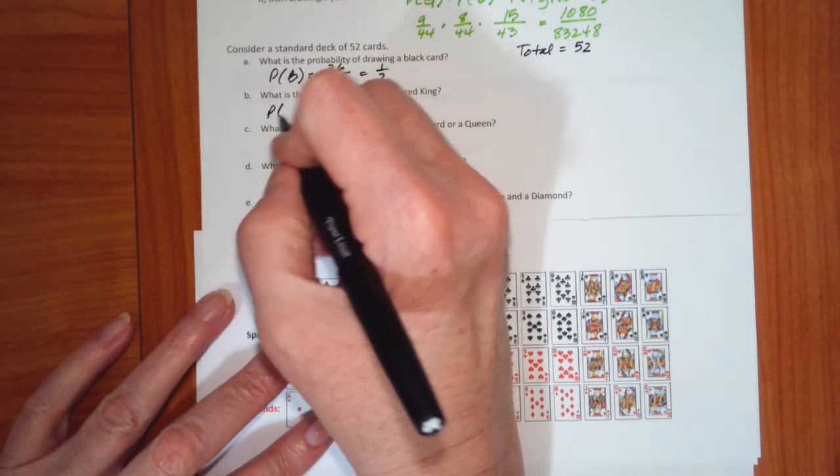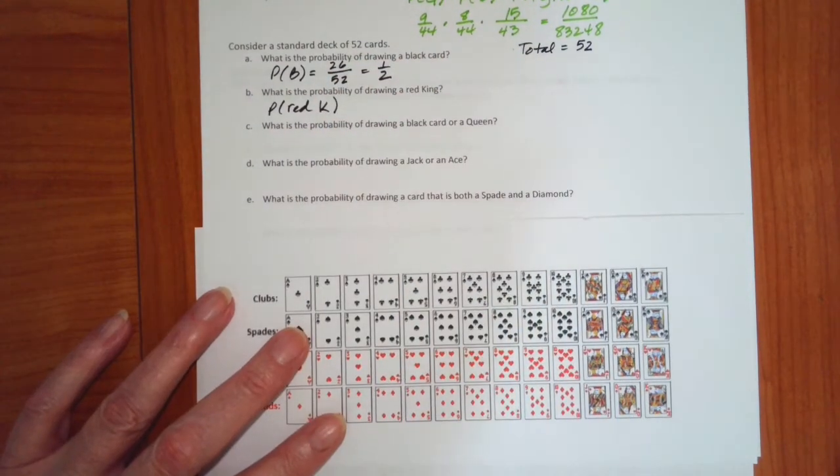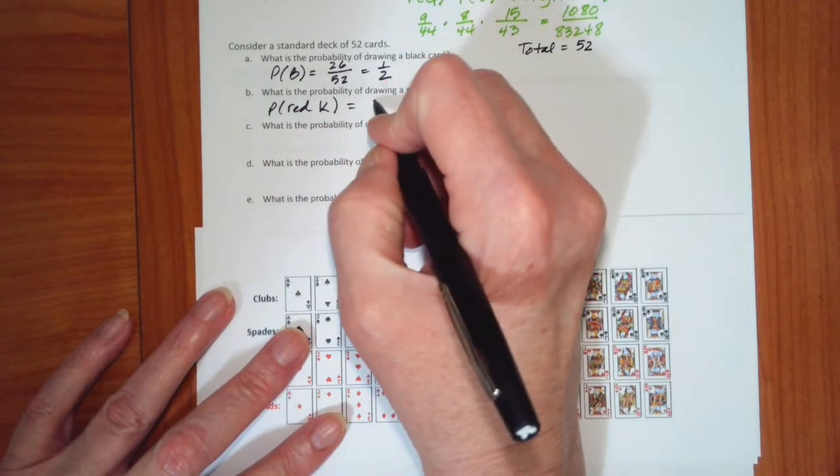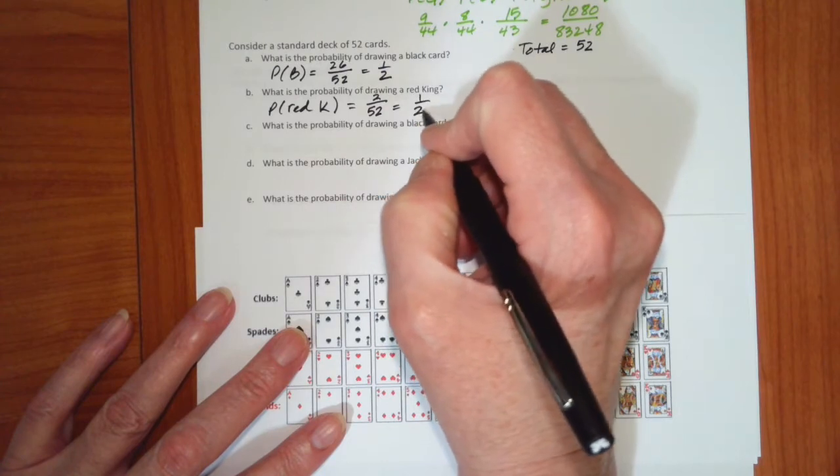Okay. Okay, what is the probability of a red king? Well, if I look at the deck of cards, there are two red kings out of the 52 cards, and that reduces to one over 26.